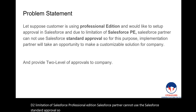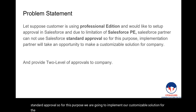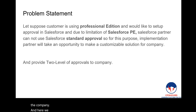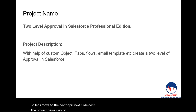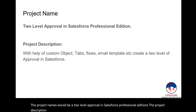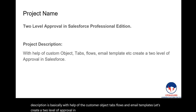For this purpose, we are going to implement a customizable solution using two levels of approvals for our customer. The project name is 'Two Level Approval in Salesforce Professional Edition.' The project description involves using custom objects, tabs, flows, and email templates to create a two-level approval system in Salesforce Professional Edition.